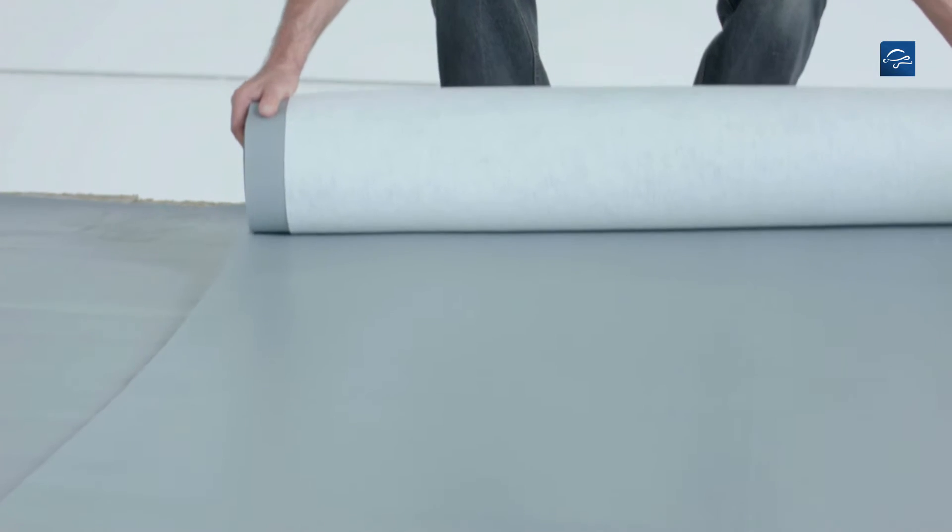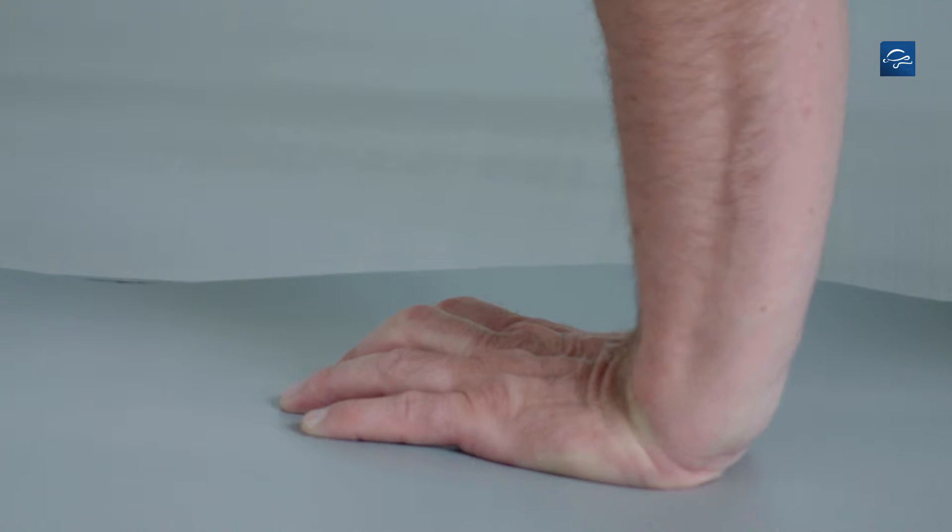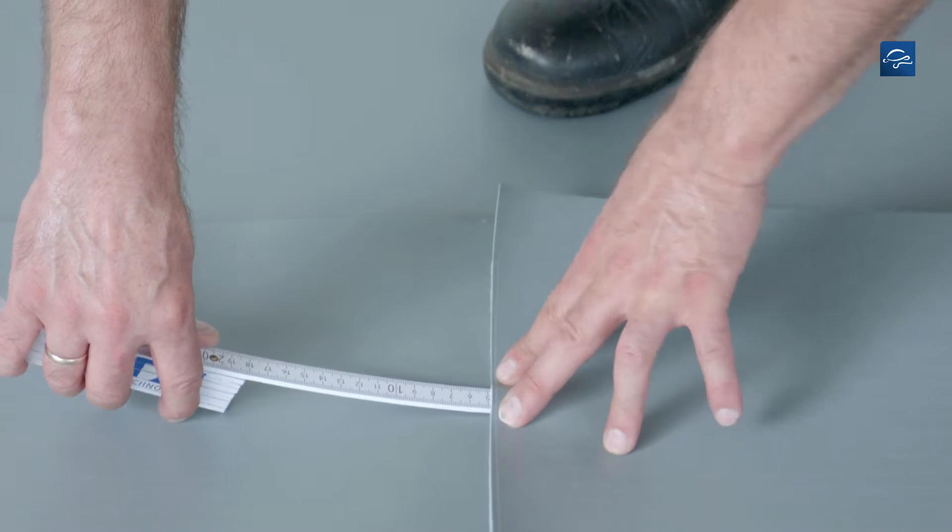The next membrane is rolled out and aligned exactly along the arrow marking. At the end of the membrane for the cross-joint with the following membrane, ensure 5 cm seam overlap.